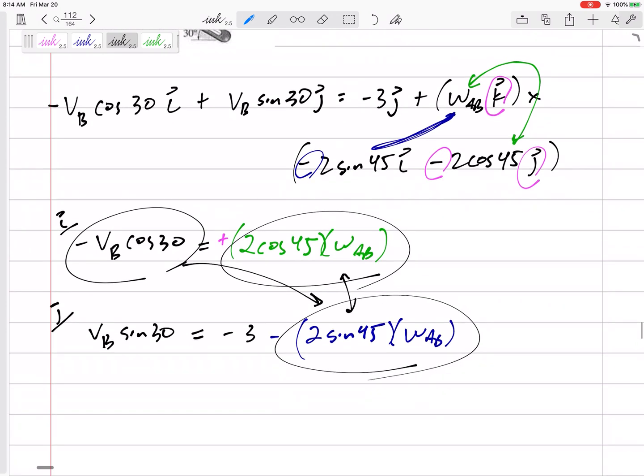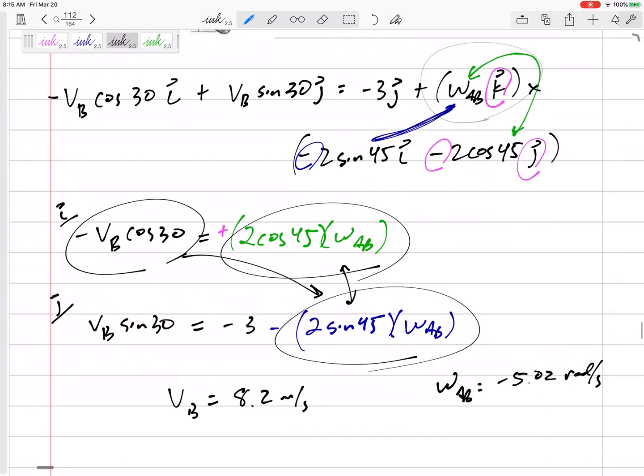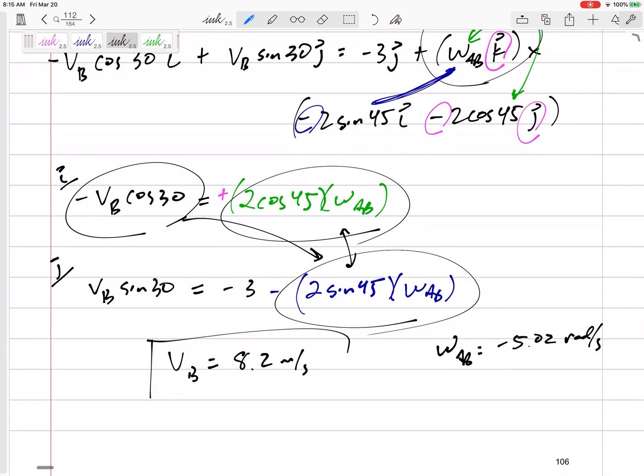Solve for V_B, I would get V_B is 8.2 meters per second. Omega would be negative 5.02 radians per second. What does that negative mean? That negative means I had guessed it was in the positive k; it's actually the negative k. So that negative means clockwise, 5.02. I think it just asked for what's the velocity of the peg B at this instant—it's 8.2 meters per second.